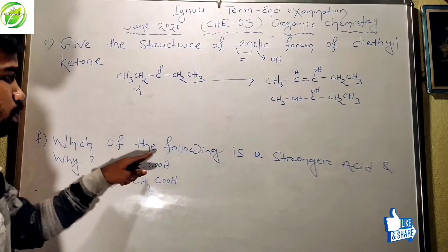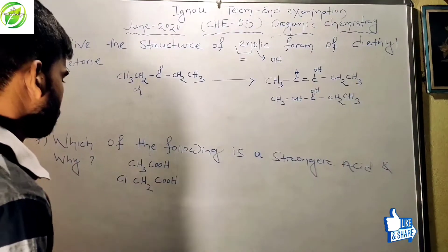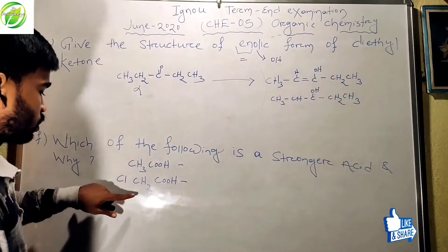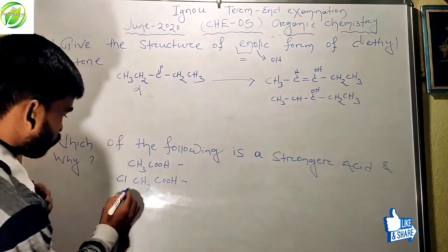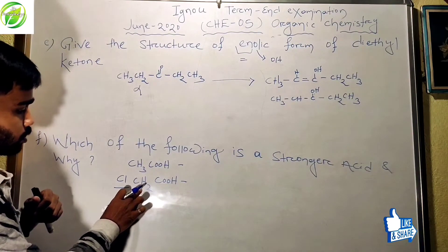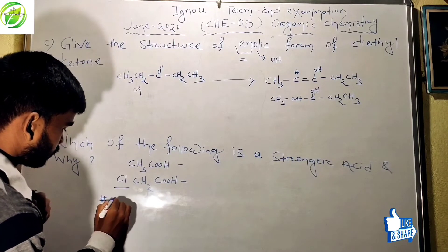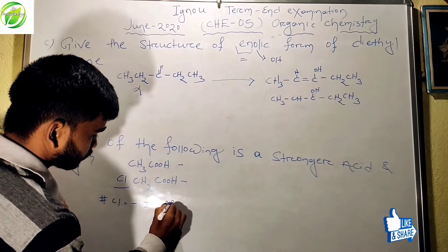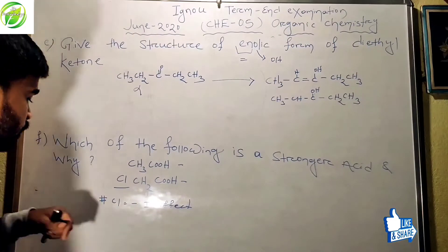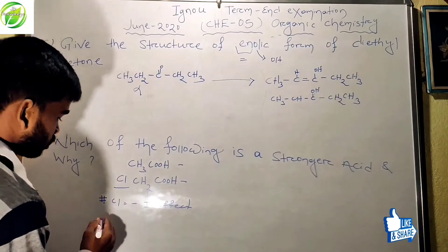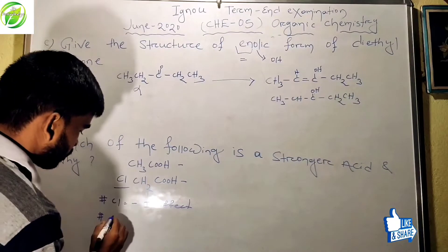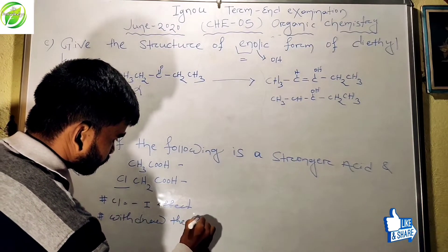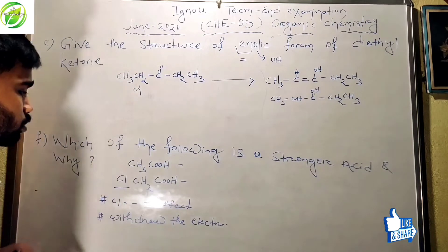Friends, the next question is: which of the following is a stronger acid and why? This is ethanoic acid and this is 2-chloroethanoic acid. Friends, you know, you clearly see that chlorine is joined to this carbon atom. So we know chlorine shows minus I effect, means it withdraws the electrons. Since this chlorine atom withdraws the electrons from this carbon atom, so this 2-chloroethanoic acid easily releases H+ as compared to ethanoic acid.